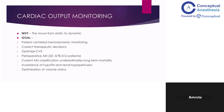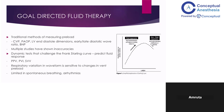The treatment for this is the optimization of volume status — your preload. Preload is the end-diastolic volume, whatever is the volume in your ventricles at the end of diastole, whatever returns to the heart from the venous system at the end of diastole. That is the filling of your heart. Initially, preload was measured by parameters like CVP, pulmonary artery occlusion pressure, and left ventricular end-diastolic dimensions. Multiple studies have shown that these are not accurate measurements — they indicate fluid status but don't accurately reflect fluid responsiveness.